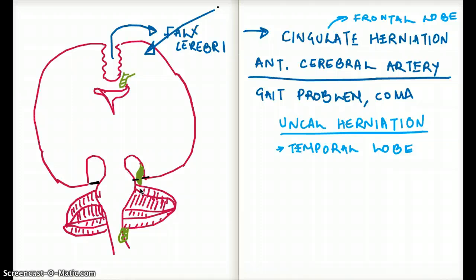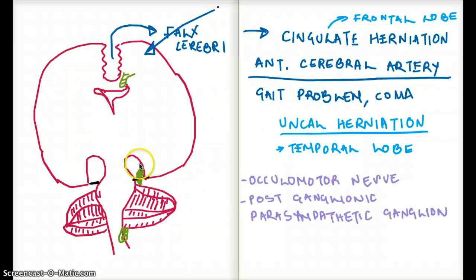What do we see in a patient with uncal herniation? Since the uncus is pressing onto the midbrain, and we have cranial nerves 3 and 4 in our midbrain, we are often going to see cranial nerve 3 palsy — the oculomotor nerve is going to be damaged. We are also going to see effects on the post-ganglionic parasympathetic fibers.